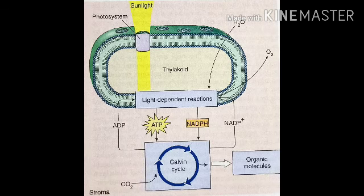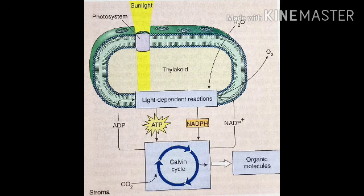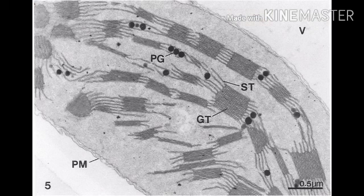It is important to note that it is the grana — or more precisely the thylakoids — where photosynthesis begins with the harnessing of light energy. However, it is completed with the production of carbohydrate in the stroma, which houses the enzymes needed for completing the process. The stroma also possesses some amount of stored starch granules.